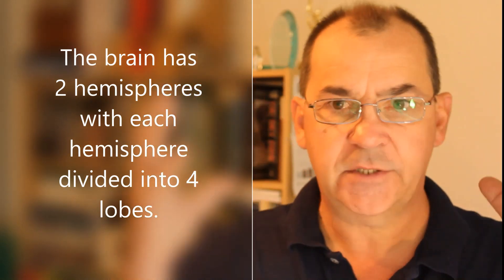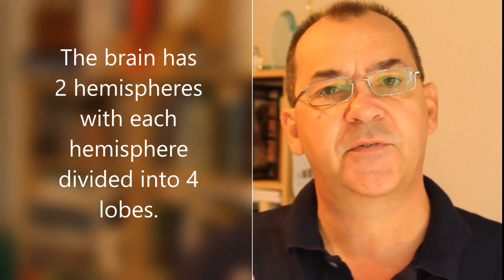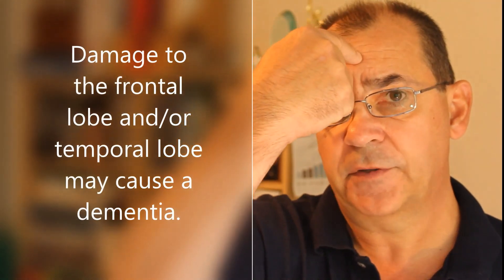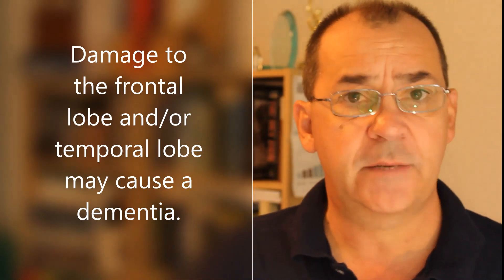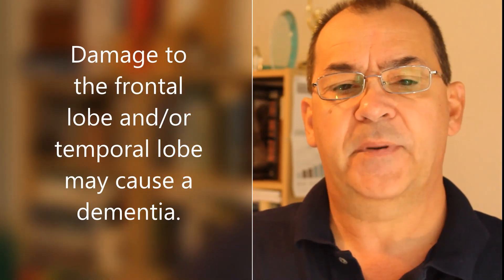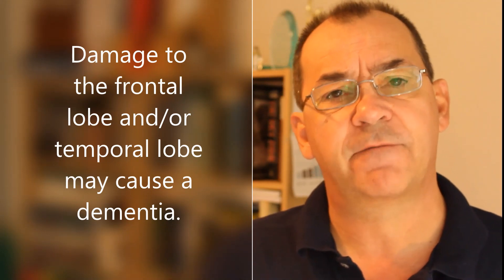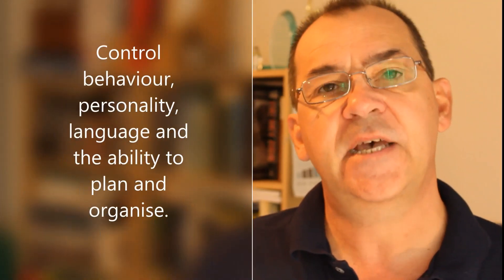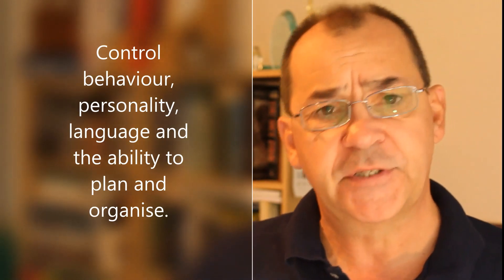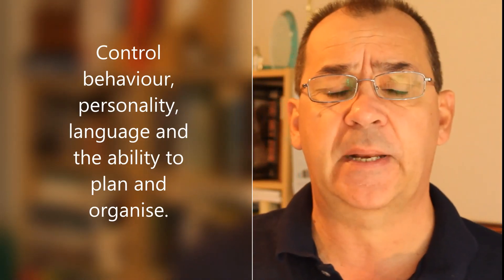The human brain is traditionally divided into two hemispheres — left and right — and each hemisphere has four individual lobes. When the frontal lobe, located behind the person's forehead, or the temporal lobes, located around the temple area, become damaged, this can cause a frontotemporal dementia.